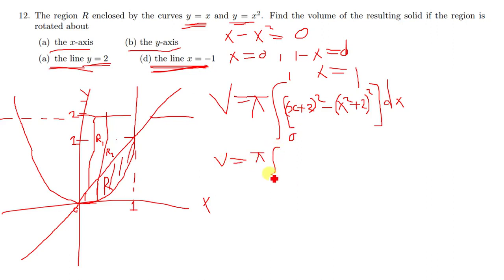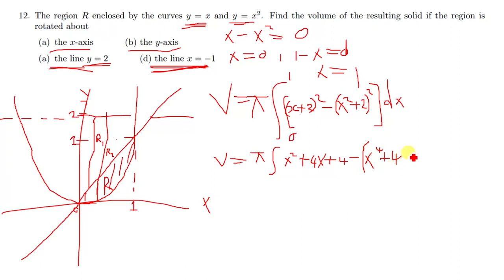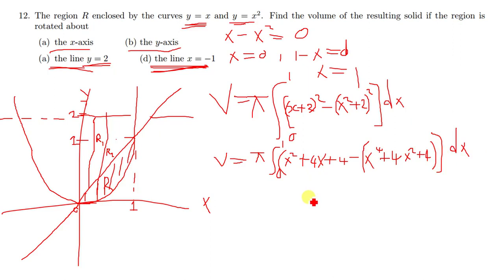Expanding: (x plus 2) squared gives x squared plus 4x plus 4; then minus (x squared plus 2) squared which gives x to the power 4 plus 4x squared plus 4. The limits are 1 and 0. It's just a matter of simplifying this further, integrating, and then plugging in your limits.